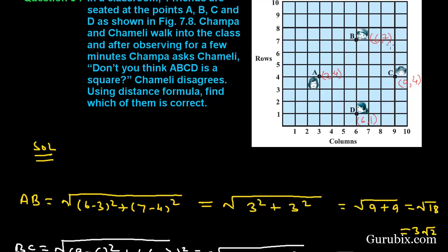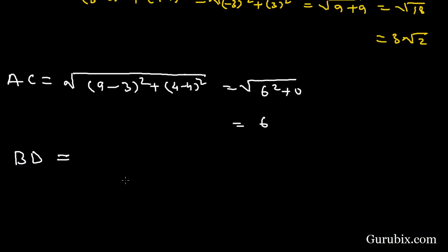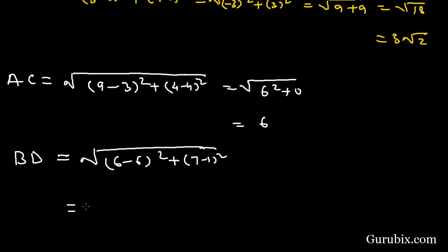Now we find the distance between B and D: coordinates of B are (6, 7) and D are (6, 1), so BD equals the square root of (6 − 6)² + (7 − 1)² = √(0 + 36) = √36 = 6.